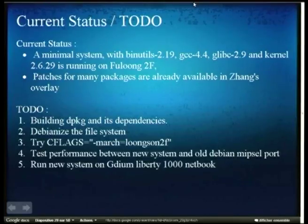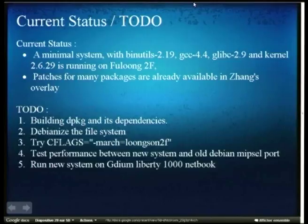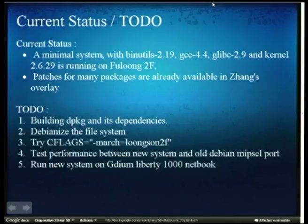For the to-do list, it's much longer, I think. First, I should finish building DPKG and its dependencies. Then I'll Debianize the file system. Third, I want to try march equals to Loongson2F. Fourth, I'll test the performance between this new system and the old Debian MIPS EL port.